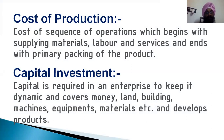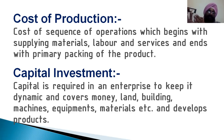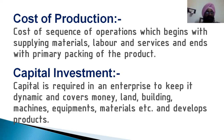There are some important definitions in this chapter. Cost of production is the cost of a sequence of operations which begins with supplying material, labor, and services, and ends with primary packing. Capital investment is the capital required in an enterprise to keep it dynamic, and covers money, land, building, machine, equipment, material, and development of the product. Capital investment means the starting money needed to run a company continuously.